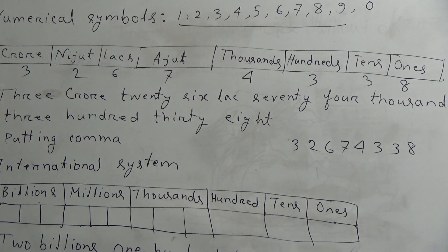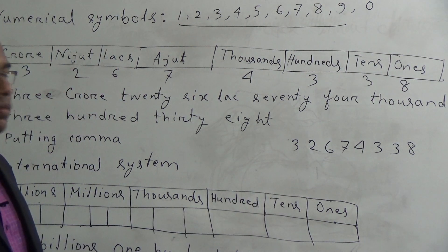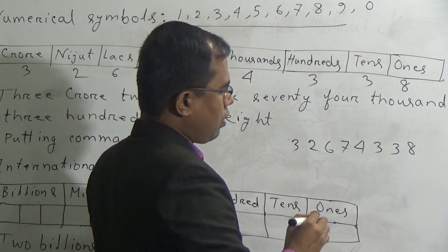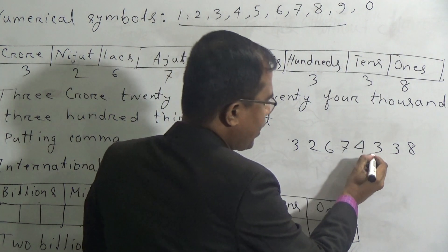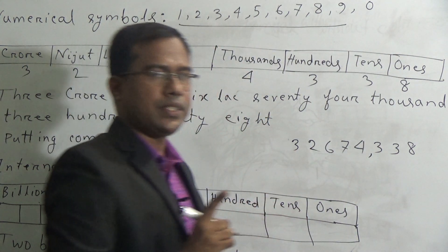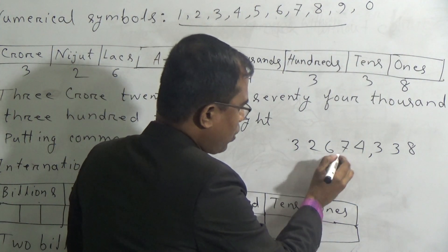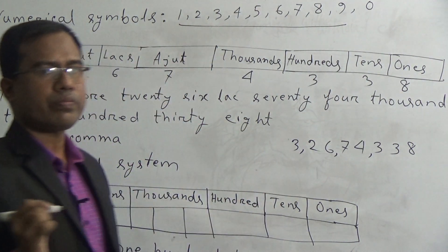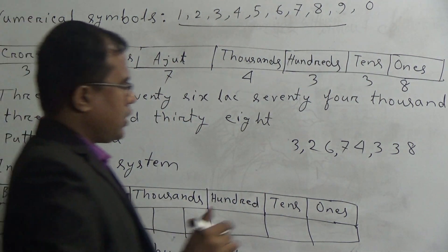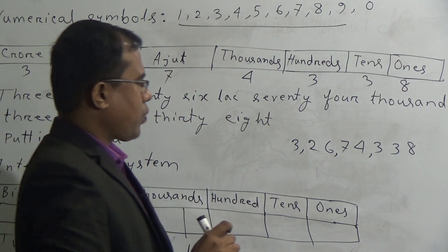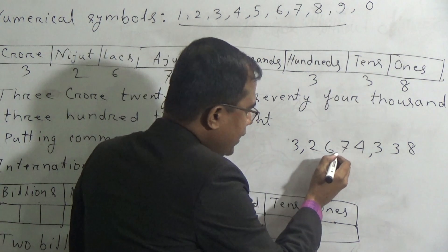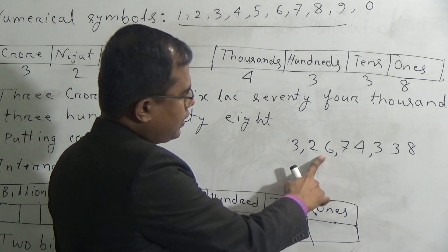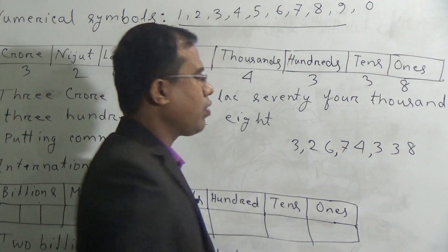Now, students, we will place commas in this number. In the national system, for placing commas, we count from the right side — that means from the 1s place. The first comma comes after 3 digits, then after every 2 digits we give a comma. So the number reads: 3,26,74,338. This is the national system, which we have already learned.